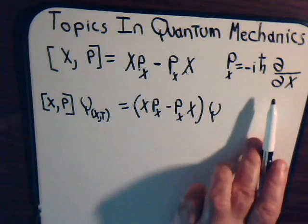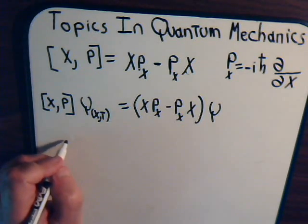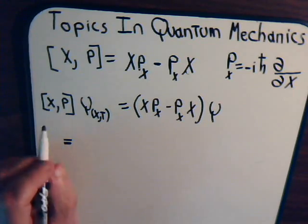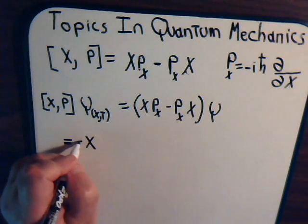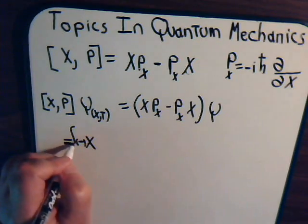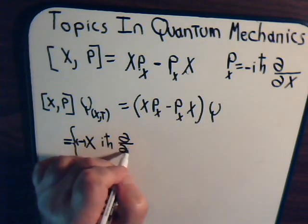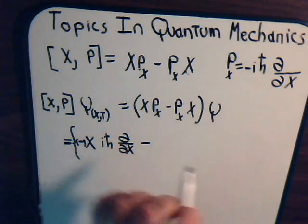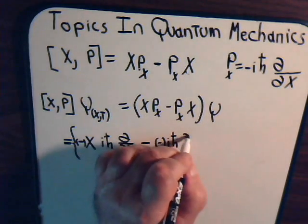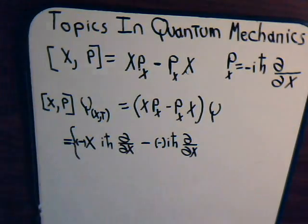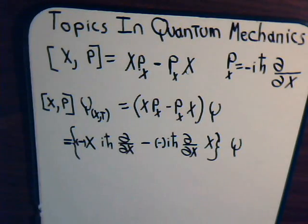Only let's rewrite this now using our definition of p of x, the momentum on the x axis. So this would be equal to x, and this is minus i h-bar, the partial with respect to x, then we have minus i h-bar, the partial with respect to x, then we have x, and then out here is psi.